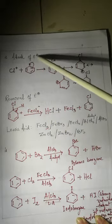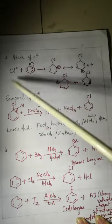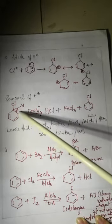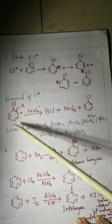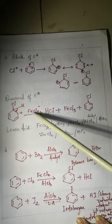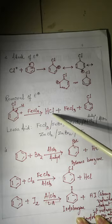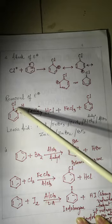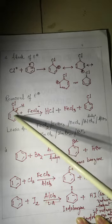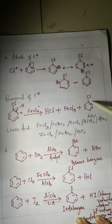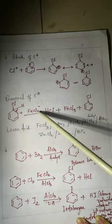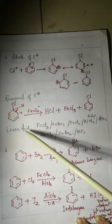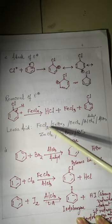Step three is the removal of the electrophile. The FeCl4 minus then acts, abstracting a hydrogen from the intermediate. This restores aromaticity. FeCl4 minus releases HCl and regenerates FeCl3 as a catalyst, giving chlorobenzene as the final product.